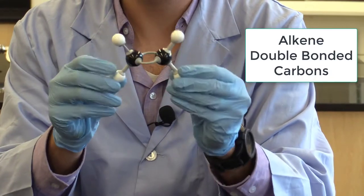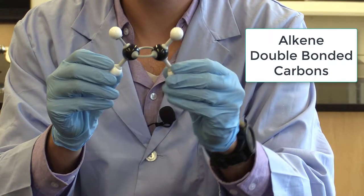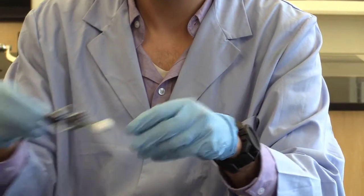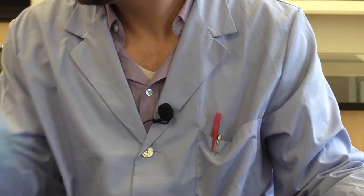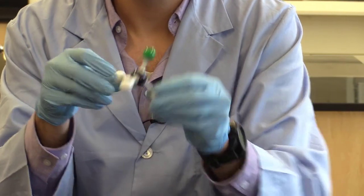This is our alkene. It's a double bond between two carbons. This is alkyne. It is a triple bond between two carbons. This is our alkyl halide.